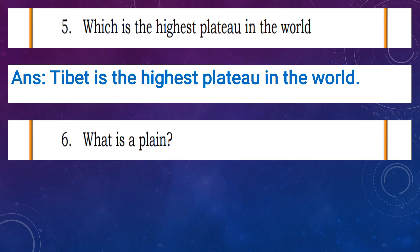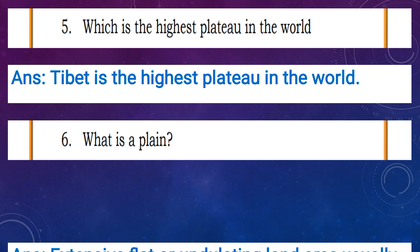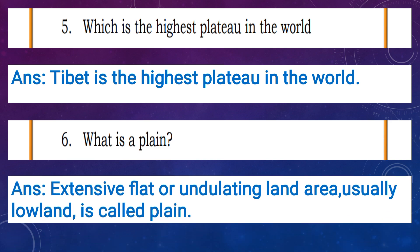Question number 6, what is a plain? Answer: an extensive flat or undulating land area, usually low land, is called a plain.